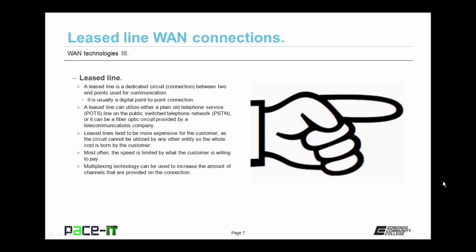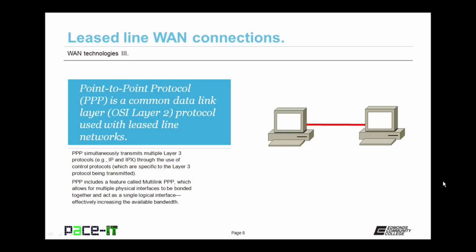Most often the speed of a leased line is limited by what the customer is willing to pay. One of the leased line technologies you need to know about is Point-to-Point Protocol, PPP. It is a common data link layer, or layer 2, protocol used with leased line networks. PPP can simultaneously transmit multiple layer 3 protocols — such as IP, IPX, and AppleTalk — through the use of control protocols specific to the layer 3 protocol being transmitted. PPP can include a feature called Multilink PPP, which allows multiple physical interfaces to be bonded together as a single logical interface, effectively increasing available bandwidth.